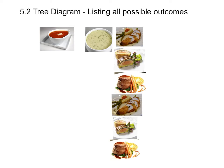Section 5.2: Tree Diagram. A tree diagram is one of the ways to list all the possible outcomes of an event.